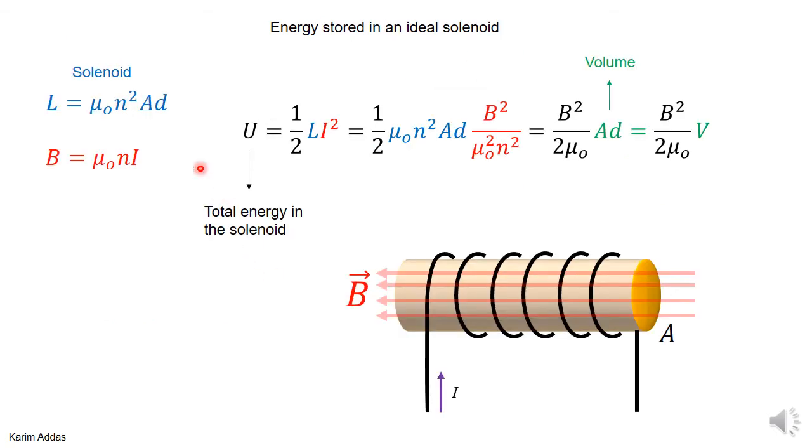Let's take a solenoid. We know the inductance of a solenoid and we know the magnetic field inside the solenoid. We substitute into the inductance L, and for I squared, it's just B squared over mu naught squared N squared. This is just a direct substitution of what the inductance and the current squared are for an ideal solenoid.